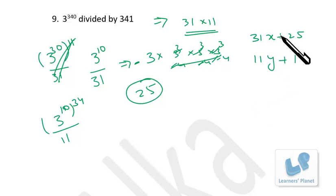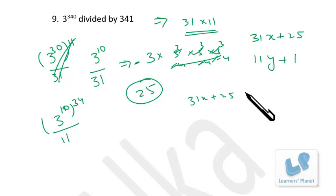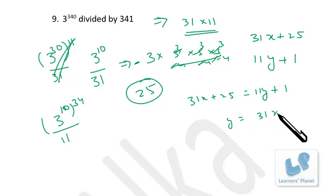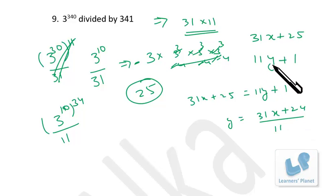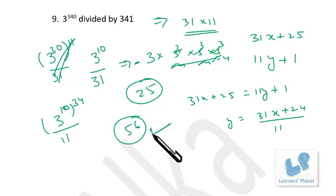We need to find a number that is in both 31x plus 25 format and 11y plus 1 format. Equating: 31x plus 25 equals 11y plus 1, so y equals (31x plus 24) divided by 11. If x equals 1, then y equals (31 plus 24) divided by 11, which is 55 by 11, so y equals 5. Then 11y plus 1 is 55 plus 1 equals 56. So 56 satisfies both formats, meaning when 3 raised to 340 is divided by 341, the remainder is 56.